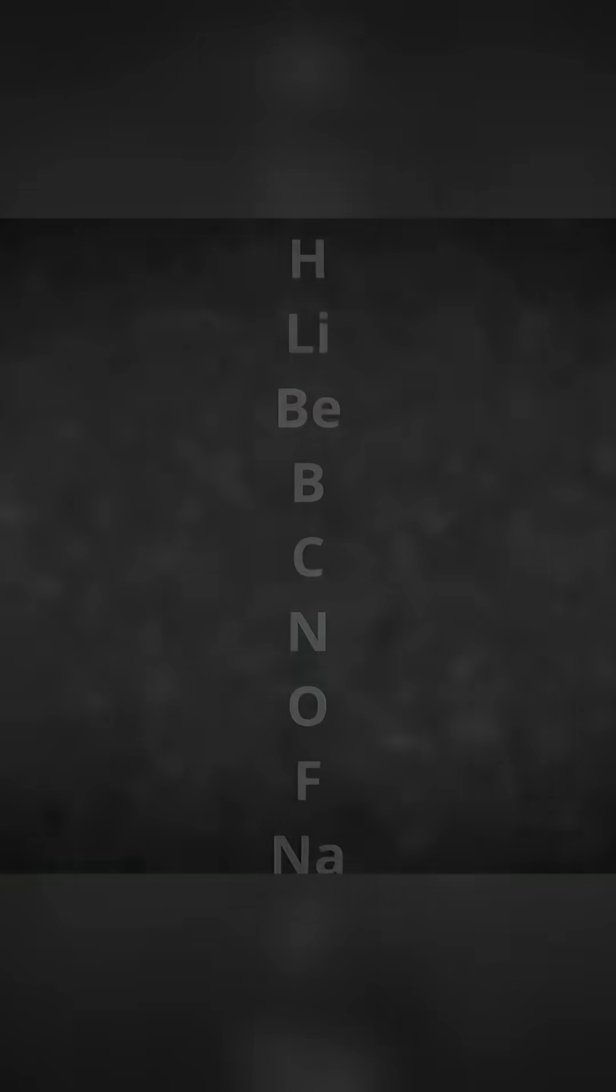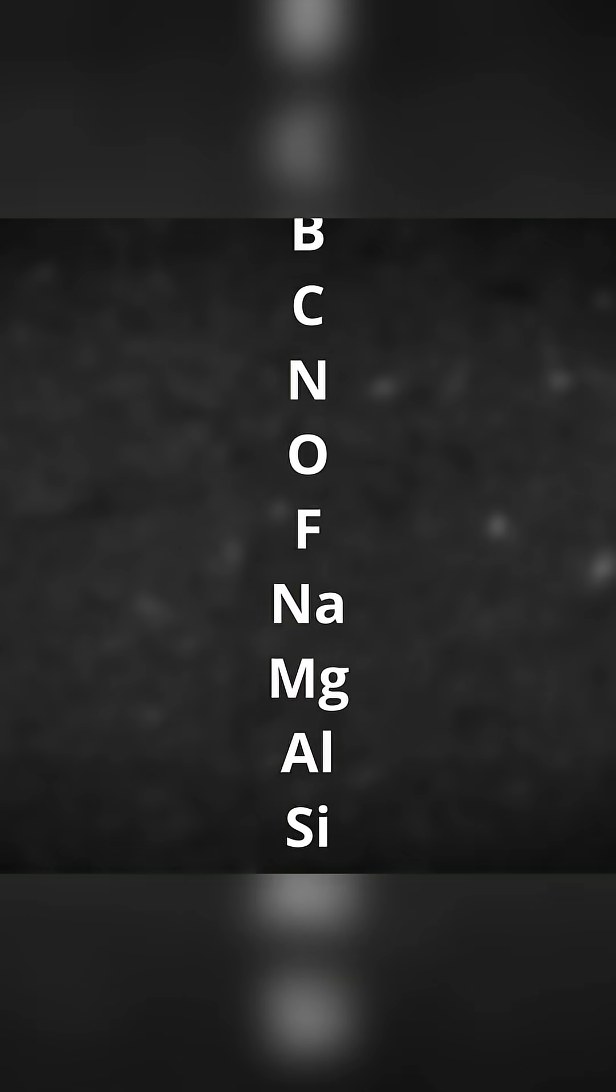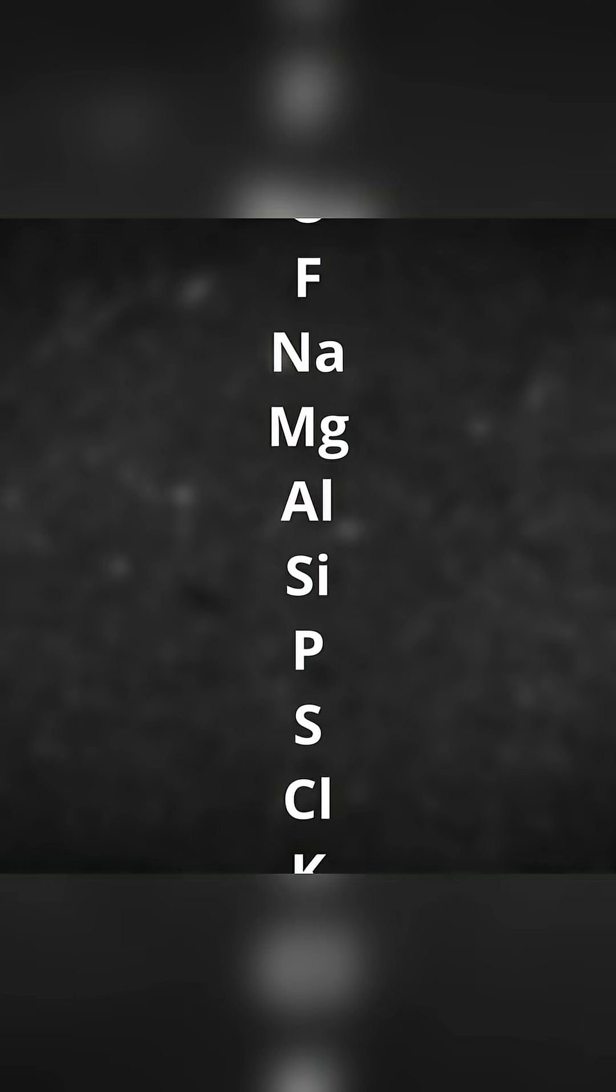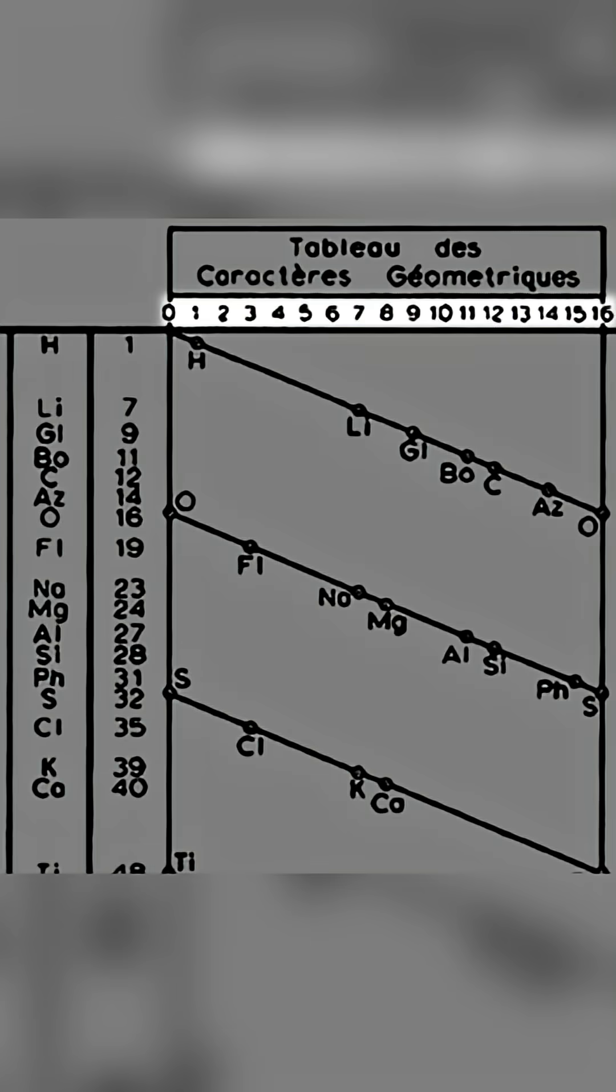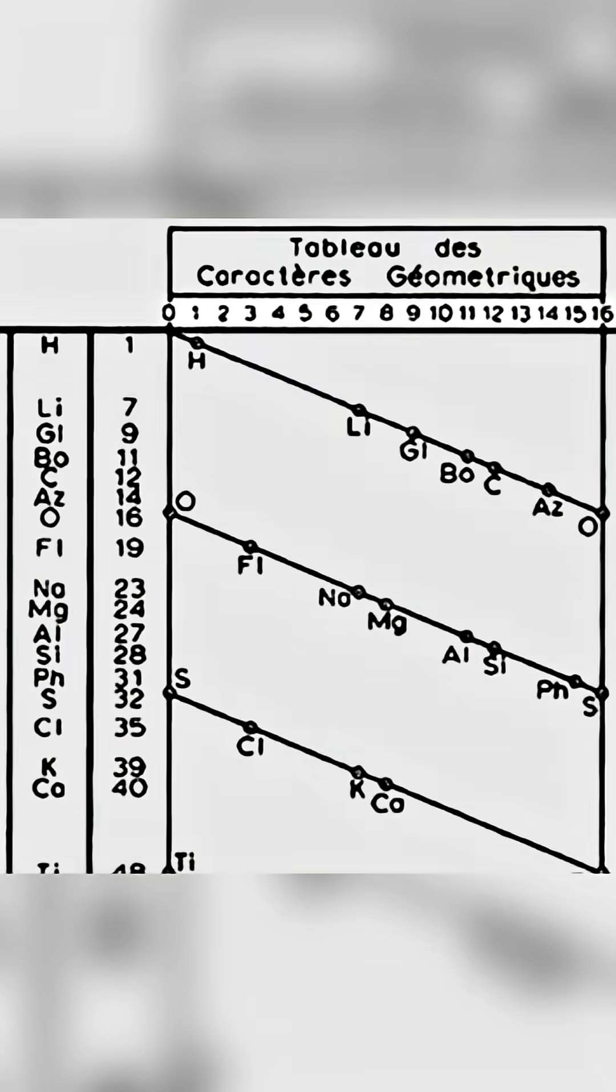Duchamp-Cortois noticed that when you order all of the elements in terms of atomic weight, something interesting happens. He illustrated this with a table that was 16 relative weight units wide, and diagonal lines that repeat down the table.